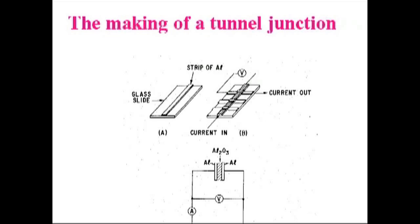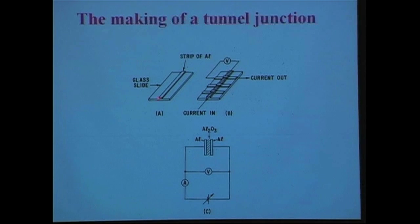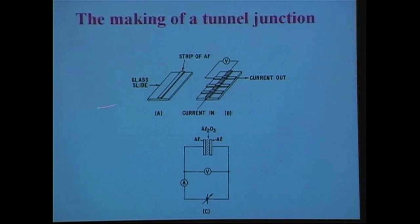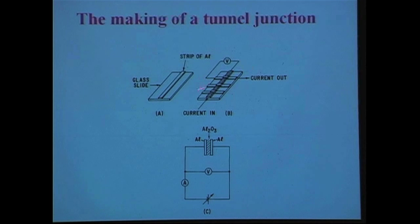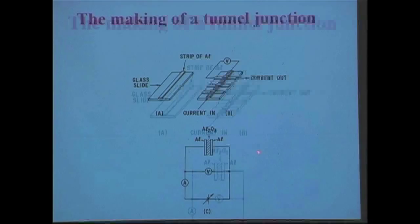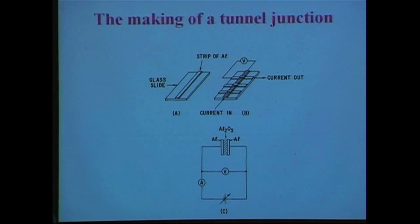Then what we have is a strip of aluminum along a glass slide. Then we wait for a little while out in the air, and the aluminum will oxidize. That means you get a thin layer of insulation on here, and then you put it back in and evaporate cross strips. So what you have made now is this circuit here. You have two pieces of aluminum separated by an aluminum oxide.